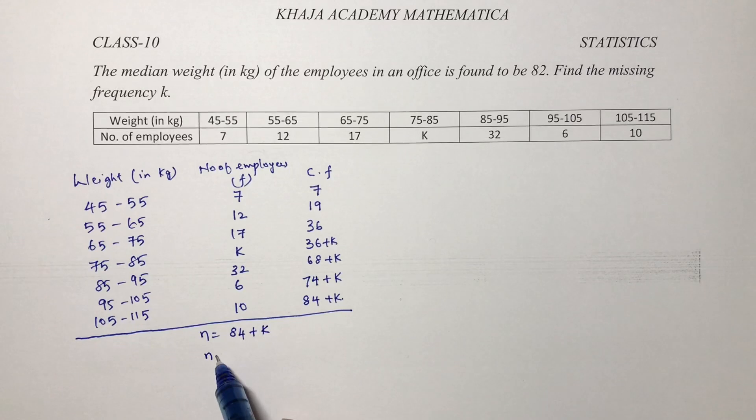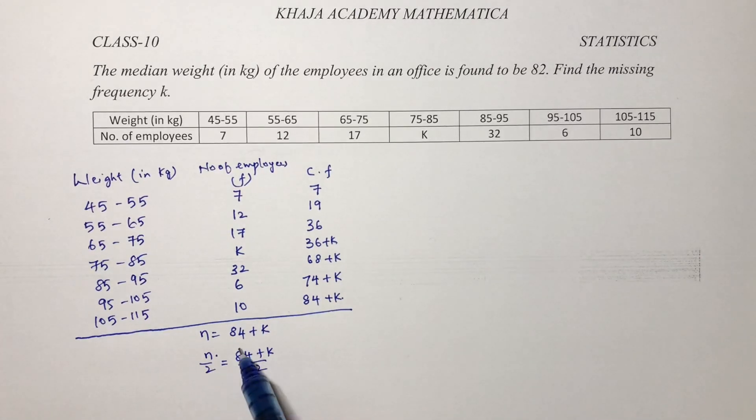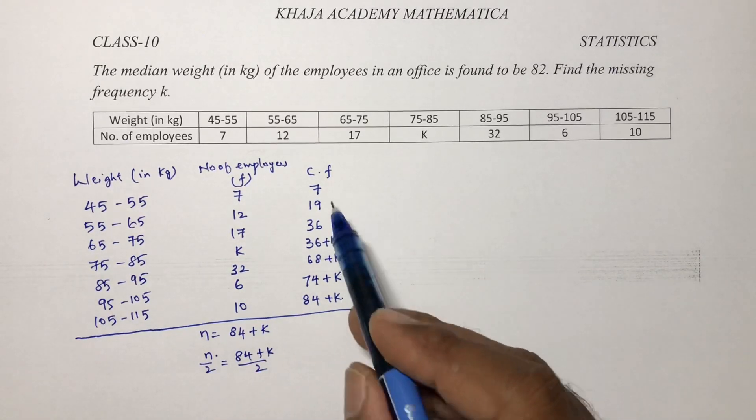And n by 2 will be 84 plus k by 2. Now for median we used to do n by 2, and by seeing the n by 2 value we used to decide where is the median class.